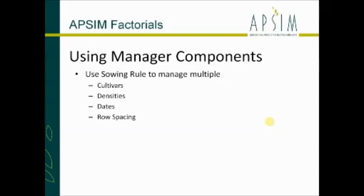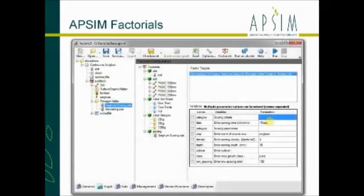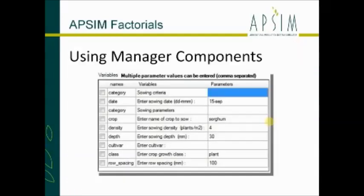Moving on to manager components - we've seen a lot about them from Belle and from Justin. It handles manager components slightly differently. With the soil and the MET it just copied the entire component across. With the manager, what we do is drag one of the managers across - the sorghum sowing rule - onto a new factor node. It automatically reads the variables in the properties tab from the manager, so it's picked them up automatically.